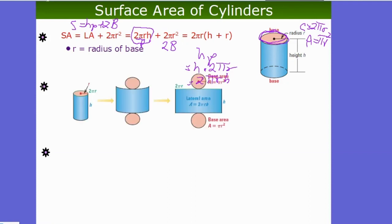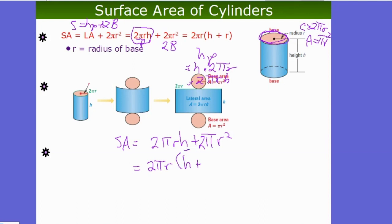Factoring out 2πr from both terms gives SA = 2πr(H + r), which simplifies the calculation. Either form — 2πrH + 2πr² or 2πr(H + r) — is correct. The factored form 2πr(H + r) is what tends to be used in practice for its simplicity.